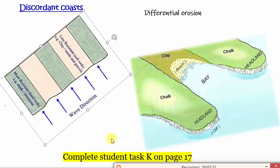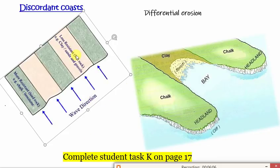In lesson, we're going to look at landforms on a concordant coast. What I want you to do in your booklets is, after you've watched this slide, read all the information on page 17 about headlands and bays on a discordant coast. Highlight the information and complete the sketch of how bays and headlands are formed in the space provided. Here we see a discordant coast where bands of rock are alternating between hard chalk and less resistant clays and sands. That's the input — that's what was there.